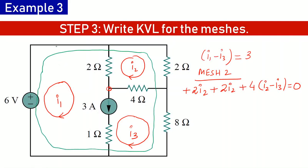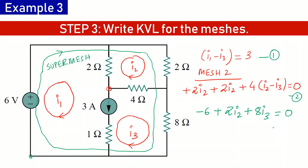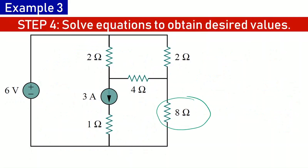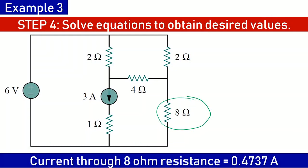This outer loop in clockwise direction is what we call a supermesh. Writing the KVL equation for this supermesh, starting from the lower potential terminal of the 6-volt source: minus 6, plus 2·i2, plus 8·i3 equals zero. We now have three equations for three variables. Solving them, with the current of interest being through the 8-ohm resistance — that is, i3 — we get the value of current as 0.4737 amperes.